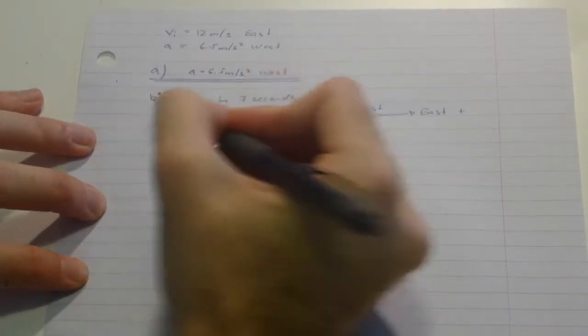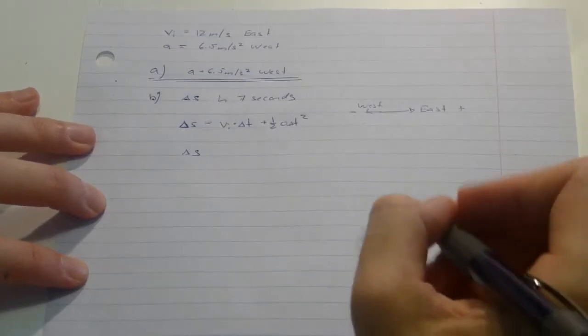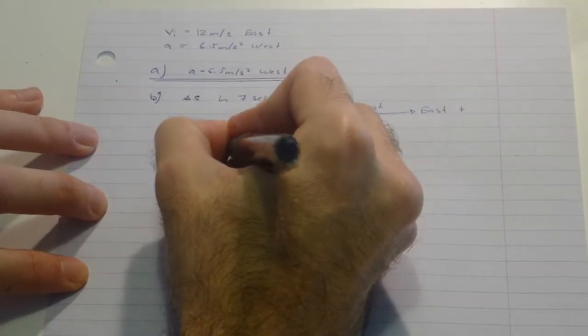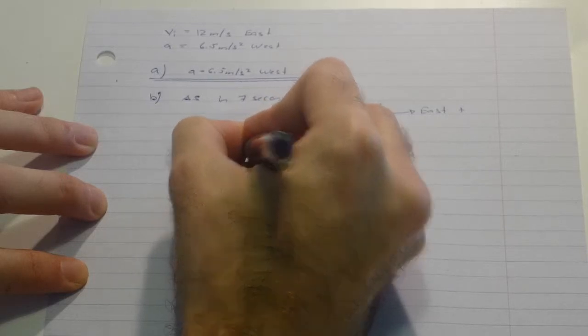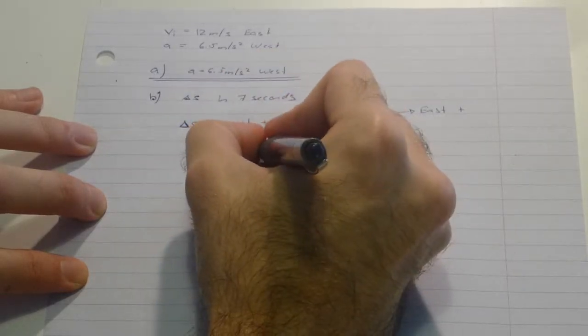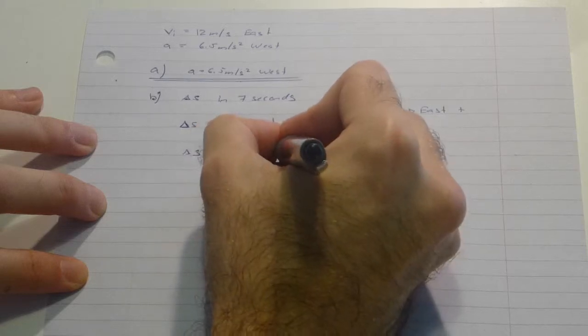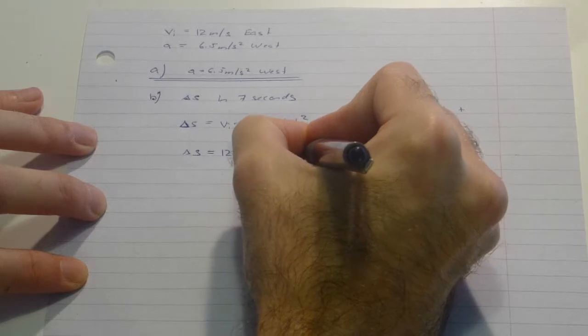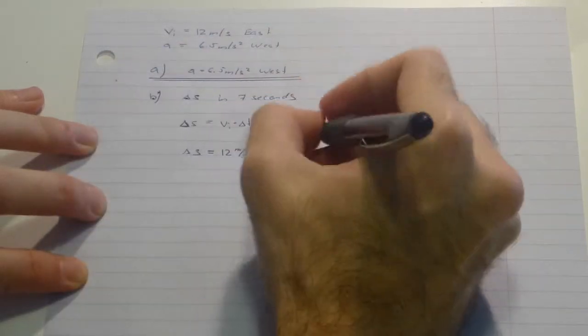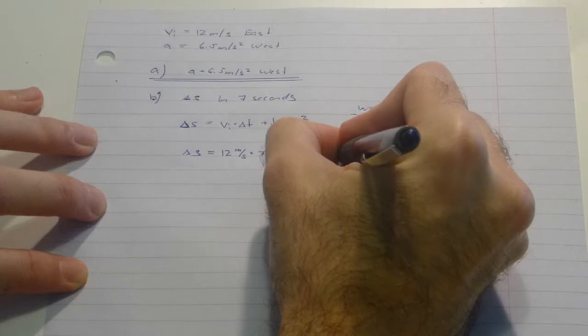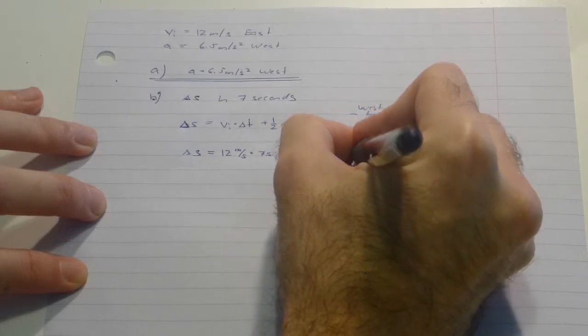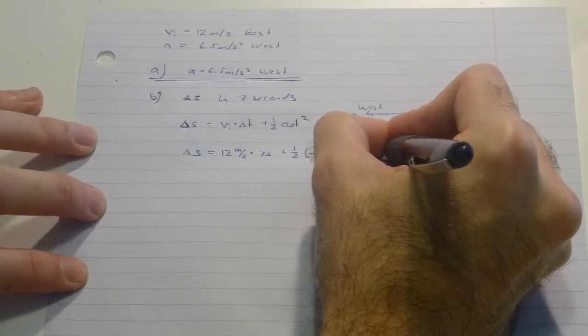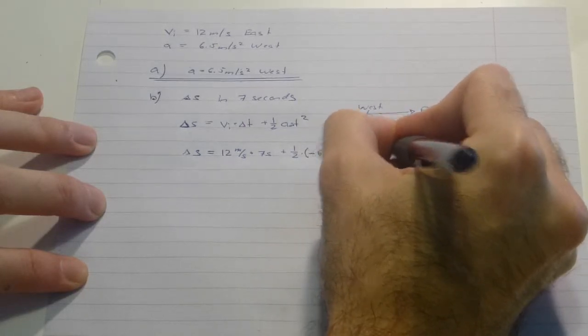Therefore, our displacement is 12 meters per second times 7 seconds plus one half times minus 6.5 meters per second squared times 7 times 7 seconds squared.